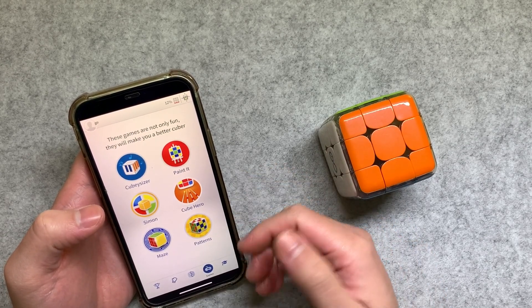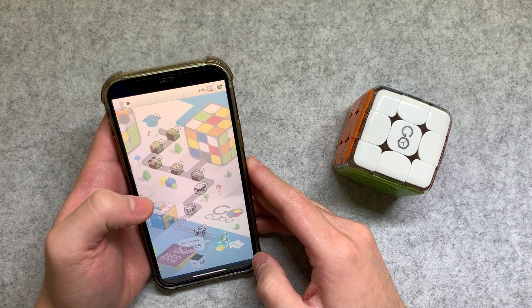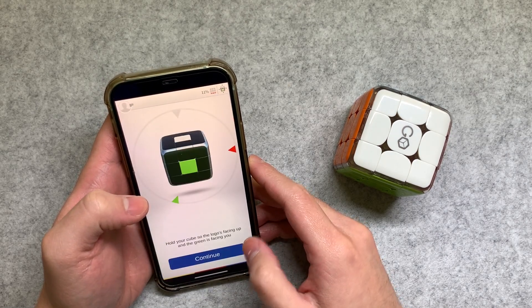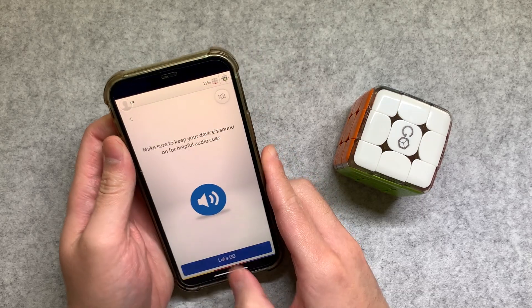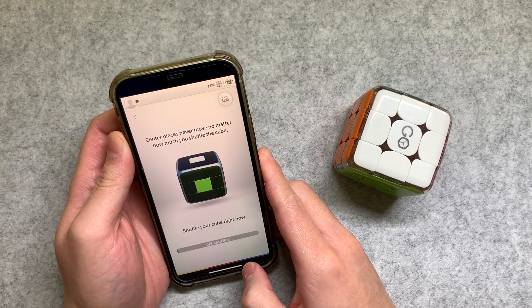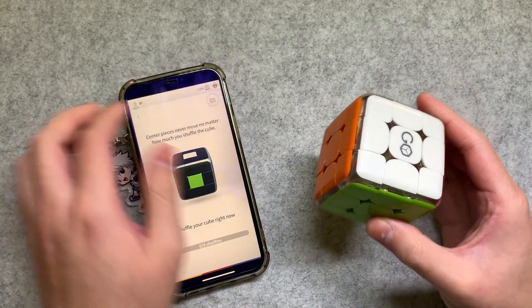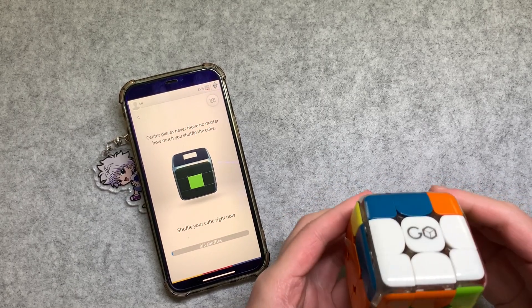Oh wow, there's so many different games as well. What is this? The academy. Basics. I think this teaches you how to actually solve a Rubik's cube. Make sure the device sounds. Seven pieces. Shuffle your cube. Shuffle. Oh wow.